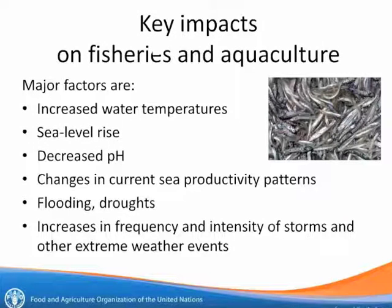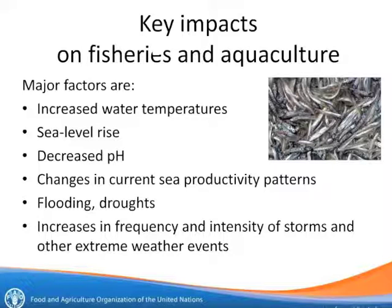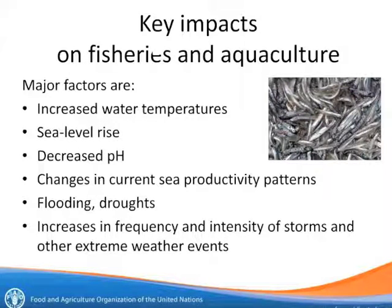Fisheries and aquaculture are impacted by climate change through different channels, like increased water temperatures in ponds or coastal areas, sea level rise, and changes in acidity of ocean water, which may affect the populations of fish species. Additionally, increases in frequency and intensity of storms and extreme weather events may also have impacts on fisheries and aquaculture.